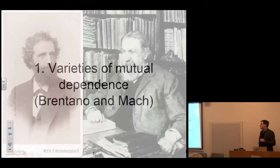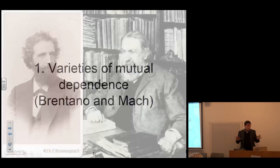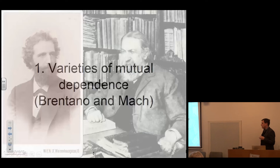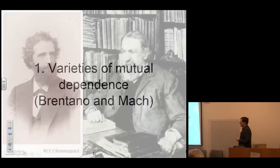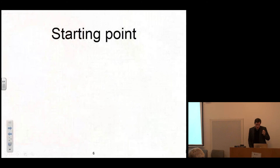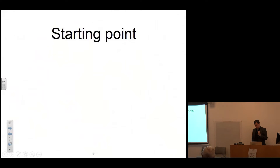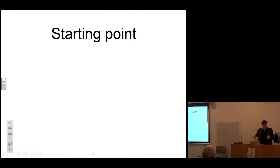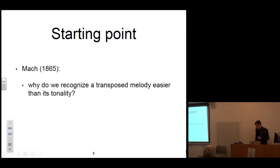The historical starting point is to be found in the philosophy of Brentano and Mach. These are two very different thinkers with very different metaphysical views, but on the aspect of the constitution or structure of mental content, they have very similar ideas. The first idea that started the question — that we have Gestalt in perception and also in our experience of forms — is in Ernst Mach's small paper on the physiology of seeing. Mach wants to answer two questions: first, why do we recognize a transposed melody easier than its tonality? And second, how do we come to recognize different geometrical forms as instances of one and the same form?